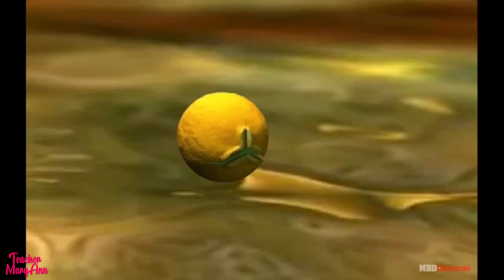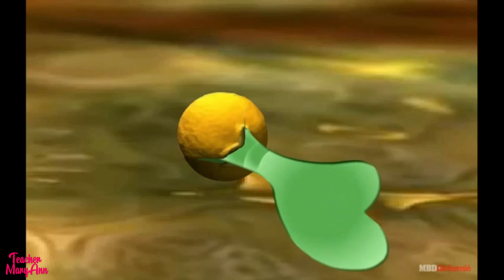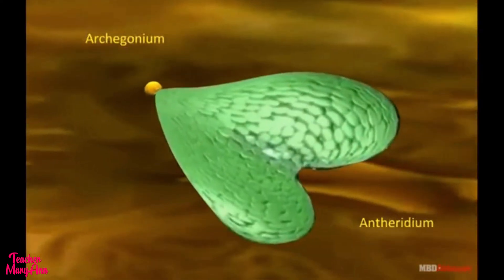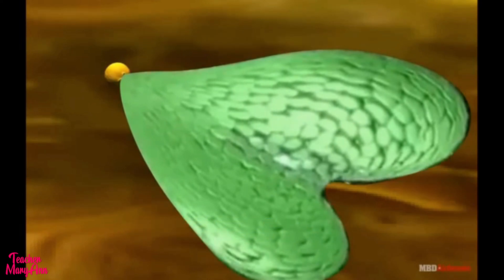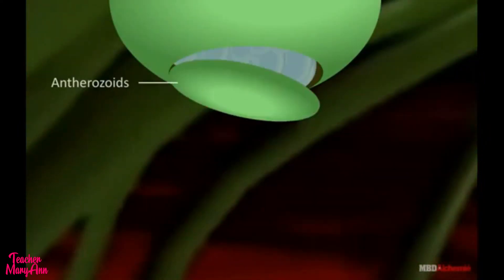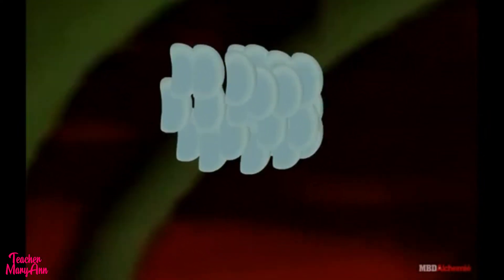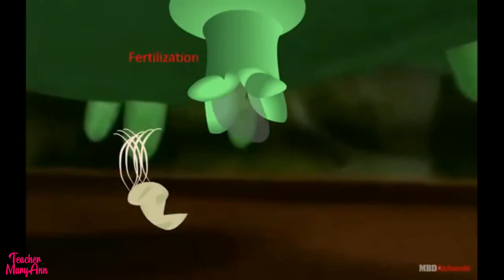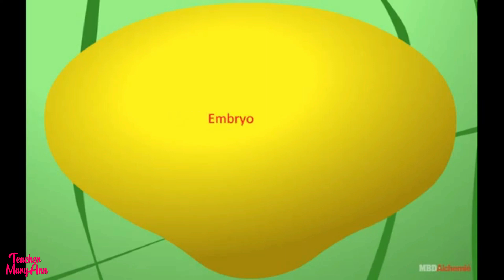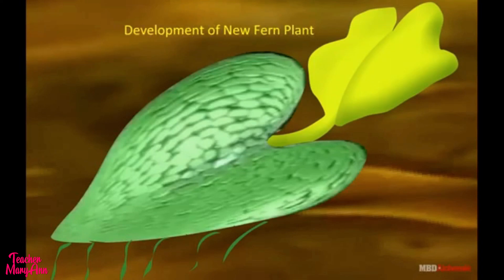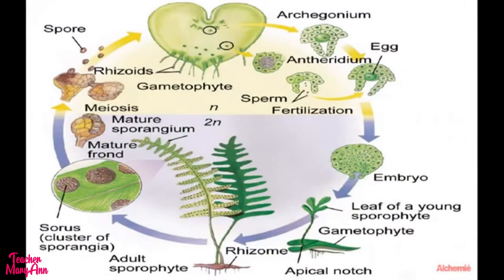The spore is minute, dark brown, and tetrahedral in shape. The prothallus is green and heart-shaped. The prothallus lies flat on the ground and bears many unicellular rhizoids. On the undersurface, antheridia and archegonia are borne. Antherozoids swim in water by their cilia. One of the sperm fuses with the egg to form a zygote, called an oospore. The oospore divides and re-divides to form the embryo. With the development of green leaf and root and with the decay of the prothallus, the sporophyte develops into an independent plant body.